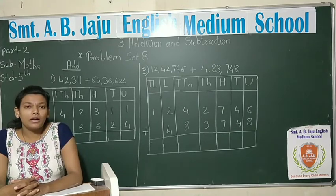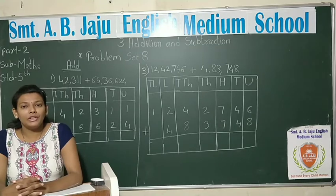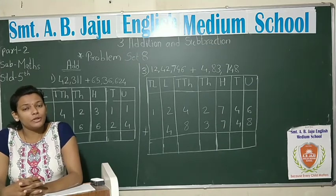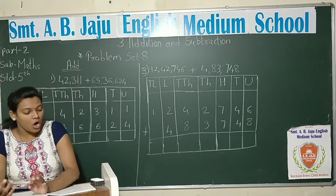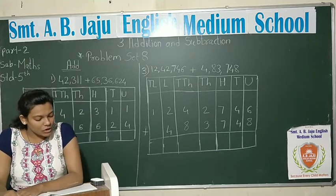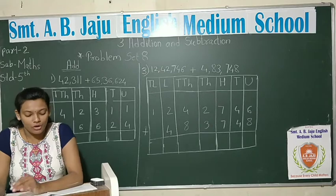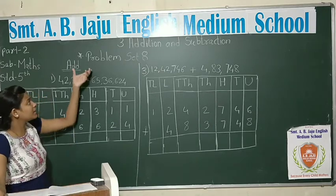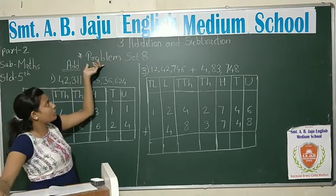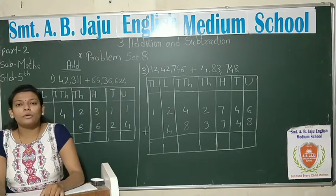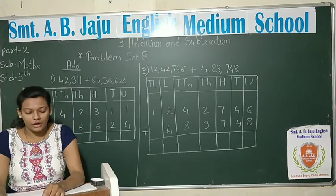We have reviewed what we did in the previous lecture. We did addition, we did a revision, we did a problem set, and we did an example — addition of 6-digit and 7-digit numbers. So students, today we are going to solve our exercise and Problem Set 8.